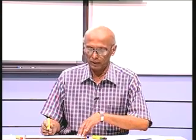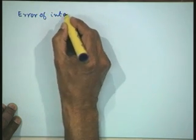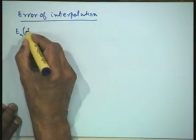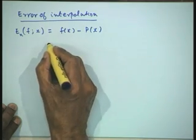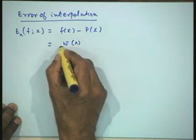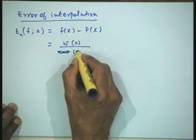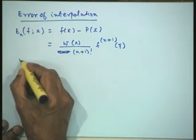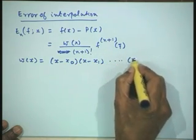In our last lecture we derived the expression for the error of interpolation in Lagrange interpolation. Let us revise what we did. We denoted the error as E_n, where n denotes the order of the polynomial. We derived that this expression is W divided by factorial(n+1) times f^(n+1)(xi), where W is the product of all factors (x minus x0)(x minus x1)...(x minus xn).